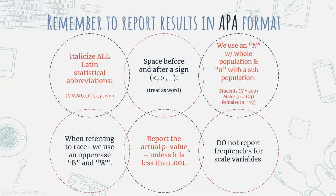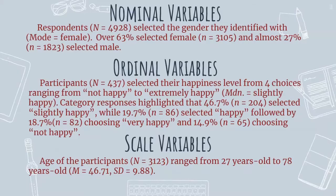With practice all of this will make sense. For nominal variables, we would write something like: 'Respondents selected the gender they identified with, with a mode of female — over 63% selected female and almost 27% selected male.' You'll notice when reading, you skim over most of the parenthetical information — these are details the reader can refer back to, but they're not needed to complete the sentence. The sentences are written purposefully so that they still make sense even without the parenthetical details.